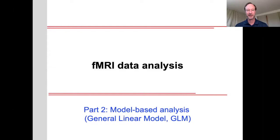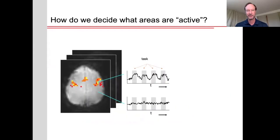This is part two of the series on fMRI data analysis, looking at model-based analysis, particularly the general linear model or GLM. So once we've pre-processed our data, how do we decide what areas are active?